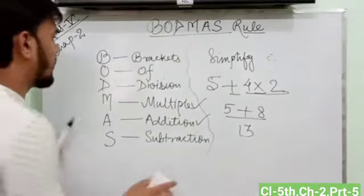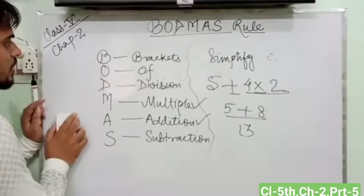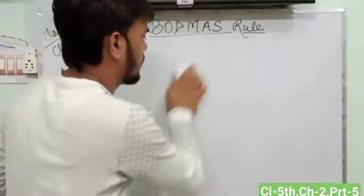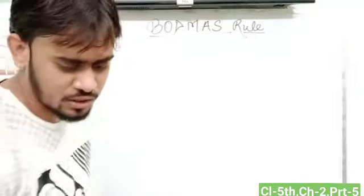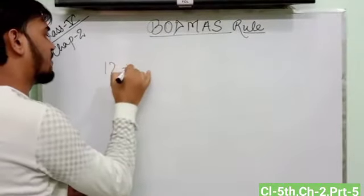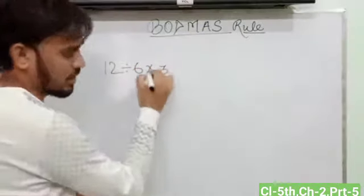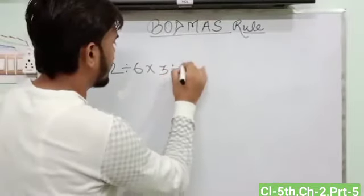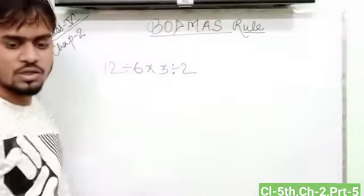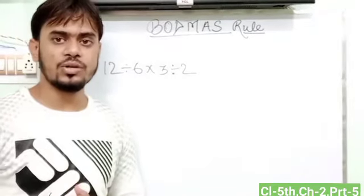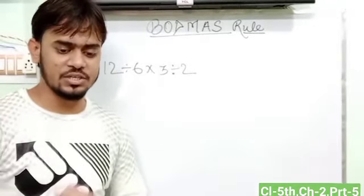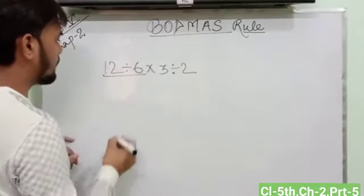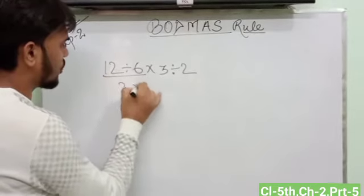Let's take another example. If we have a question, 12 divided 6 into 3 divided 2. So first of all, there are two types of operations, division and multiplication. So first we have to solve this one. 12 divided 6 is equal to 2.